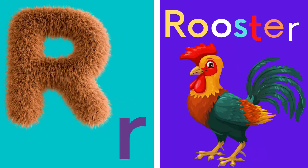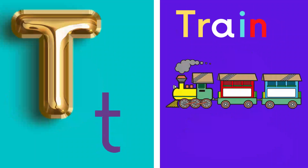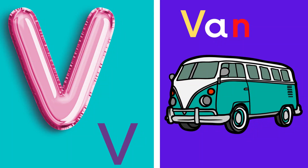R for Rooster, S for Snake, T for Train, U for Umbrella, V for Whale.